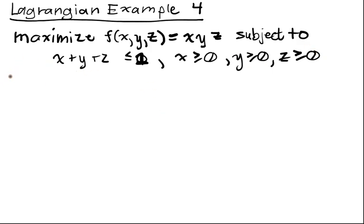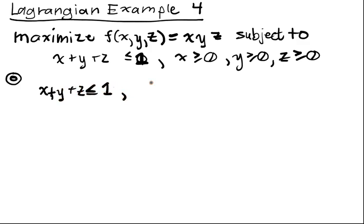So the zeroth step: before you do anything else, you need to make sure the inequalities are going in the proper direction. x plus y plus z is less than or equal to one is already going in the right direction. We negate x, negate y, and negate z in order to get those inequalities in the correct direction.